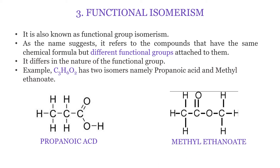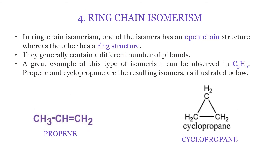The fourth type is ring chain isomerism. The name itself suggests that one isomer is in ring form and another is in chain form. For example, both propene and cyclopropane share the molecular formula C3H6. Propene is a straight or open chain, whereas cyclopropane is a cyclic structure. That is why this isomerism is called ring chain isomerism — one isomer is open-chained while another is closed.